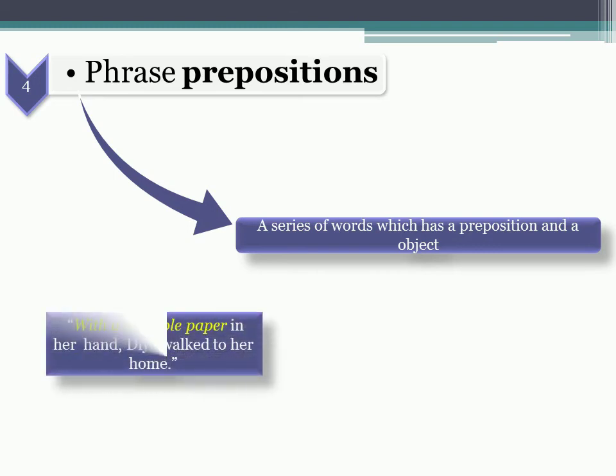With reusable paper in her hand, Dia walked to her home. With a reusable paper, this is a phrase preposition. In this, with is the preposition and reusable paper is an object.